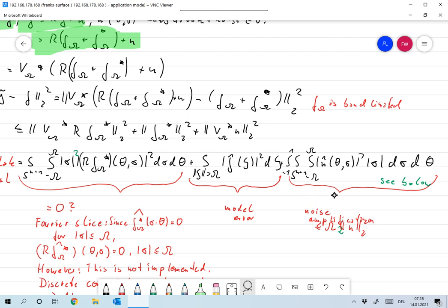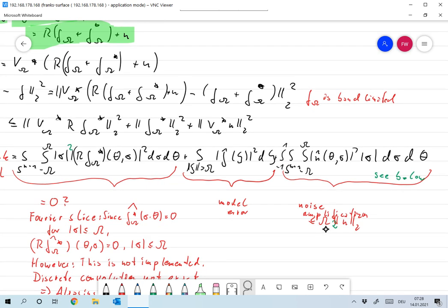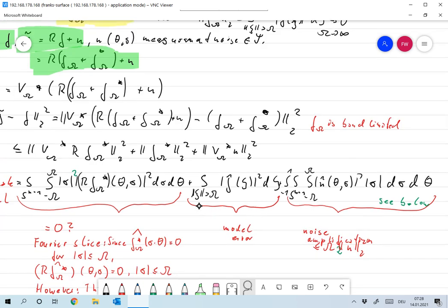The noise amplification goes with omega squared times the norm of n squared. That should be omega squared times the Euclidean norm of n squared.